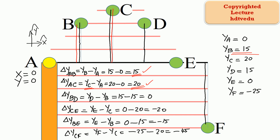What is the vertical displacement between points B and D? Final is D, initial is B — so YD minus YB. The vertical position at D is 5, 10, 15. The vertical position at B is 5, 10, 15. So the displacement between points B and D is 0.